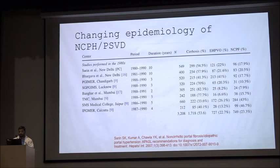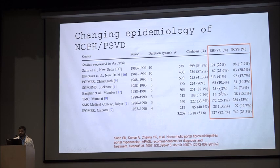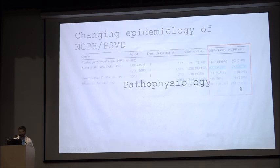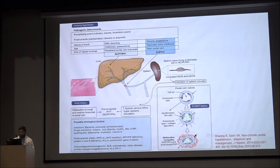In epidemiology, before 2000, the frequency of EHPB or NCPF was around 40% in the Chandigarh group and 20% in the New Delhi group. Later, till 2005, it decreased to 9% or 6.5%, and currently it is around 5%.